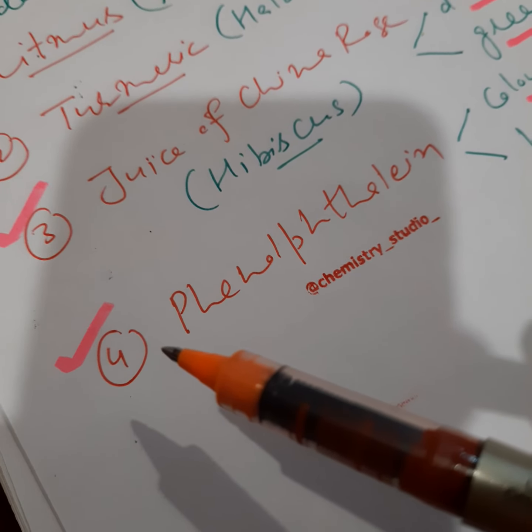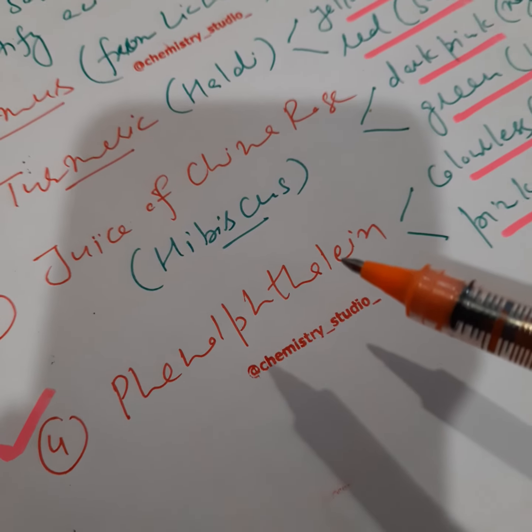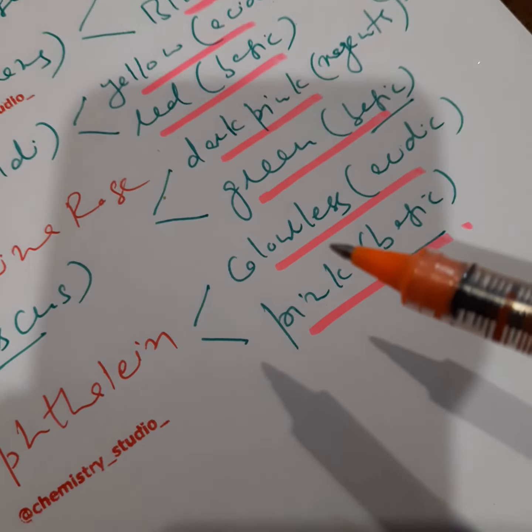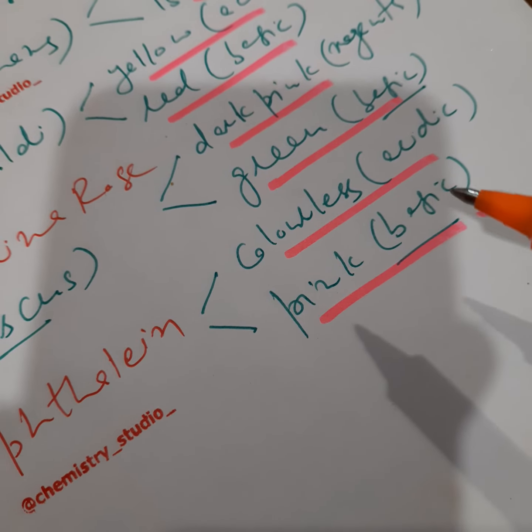Next we talk about phenolphthalein. It is a chemical used in science laboratories. It turns colorless in acidic medium and turns pink in basic medium.